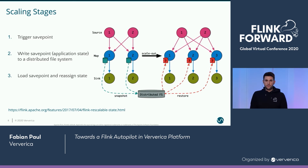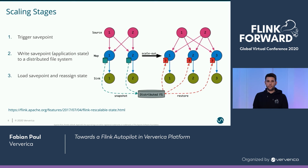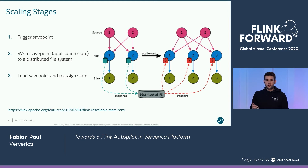In the picture, it basically shows from left to right we start with a parallelism of two and then go up to three, and we have to reshuffle your data based on the partitions. As probably most of you know, this is a quite expensive operation, because the data needs to be sent to the file system and then read again. So it's important for the autopilot that we minimize the scaling steps.